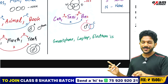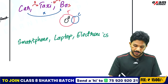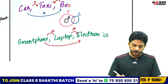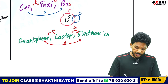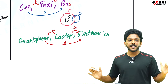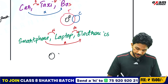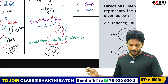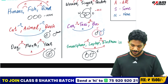Last example: Smartphone, Laptop, Electronics. Both smartphone and laptop are electronics — so they both sit inside the electronics circle. Smartphone and laptop are separate from each other but both under electronics.